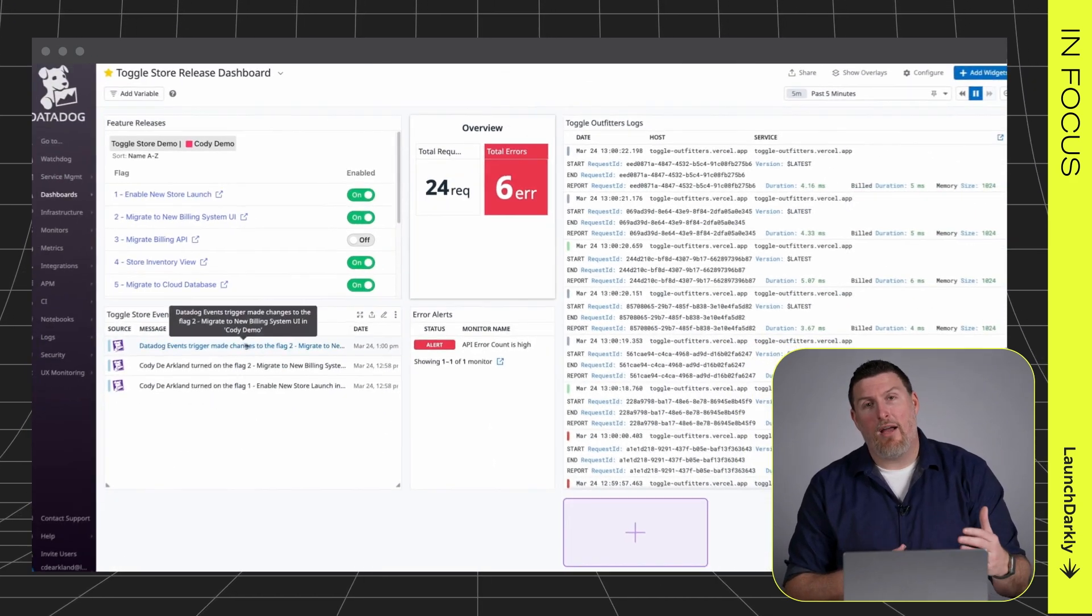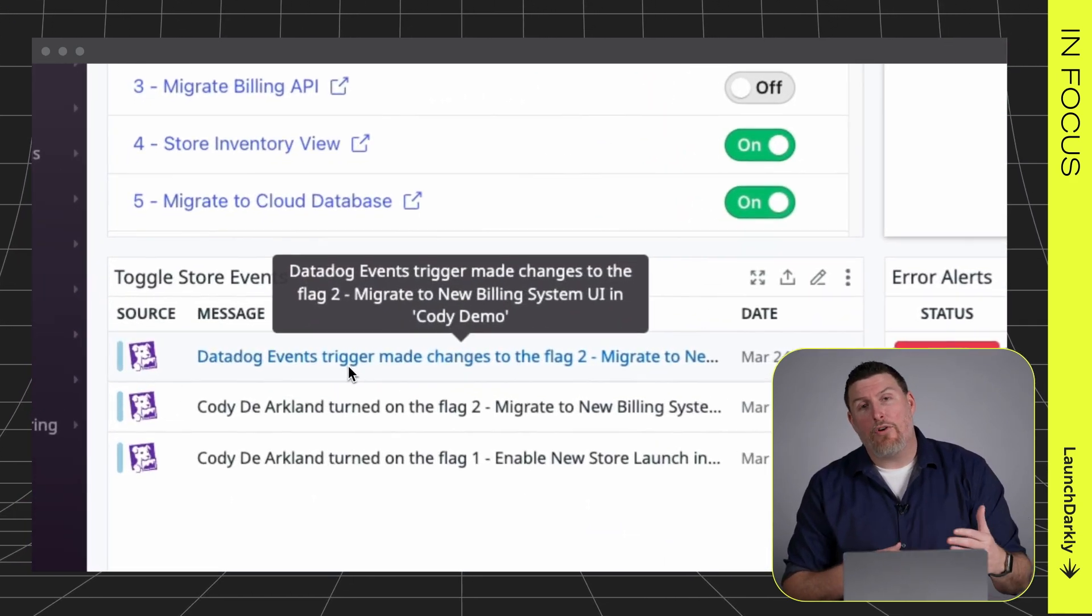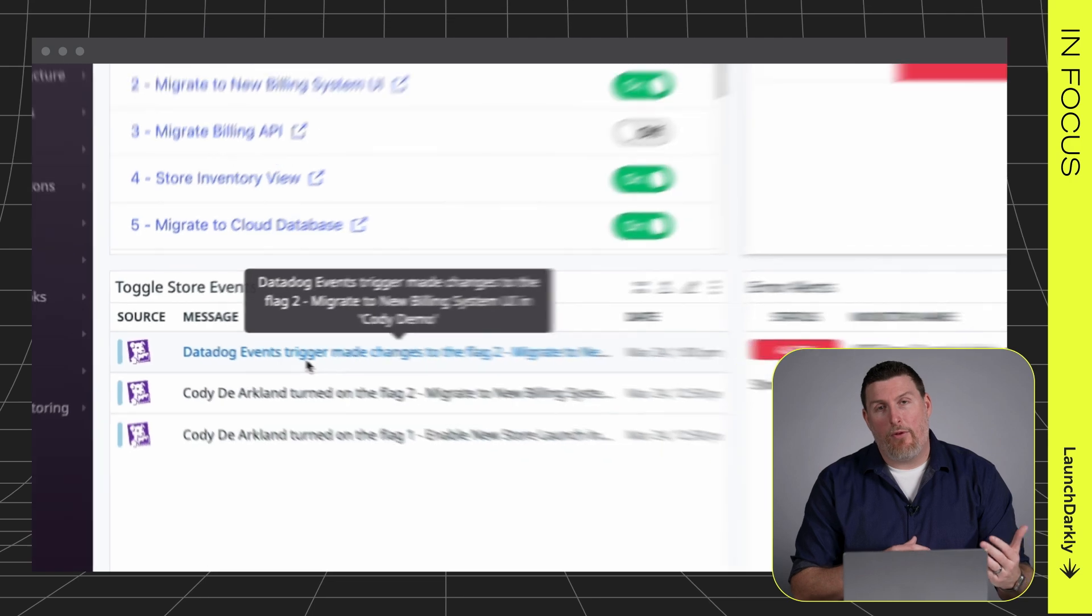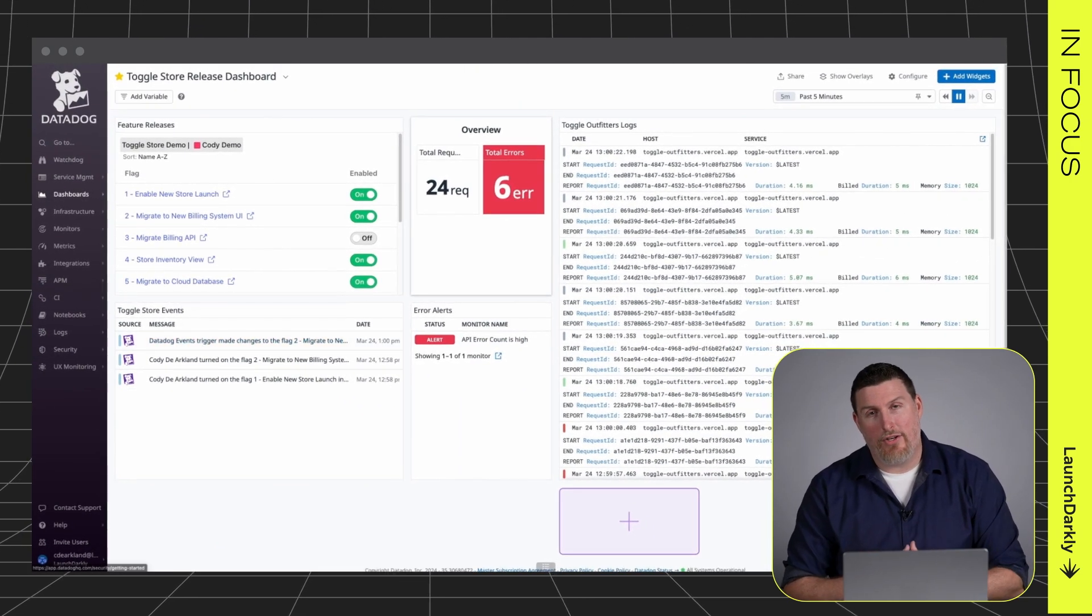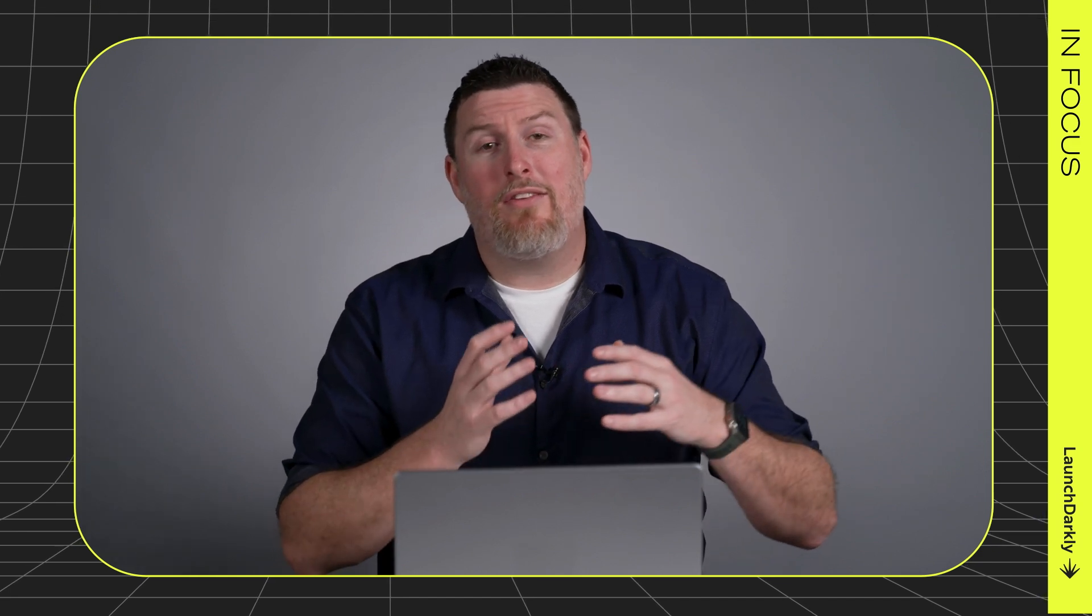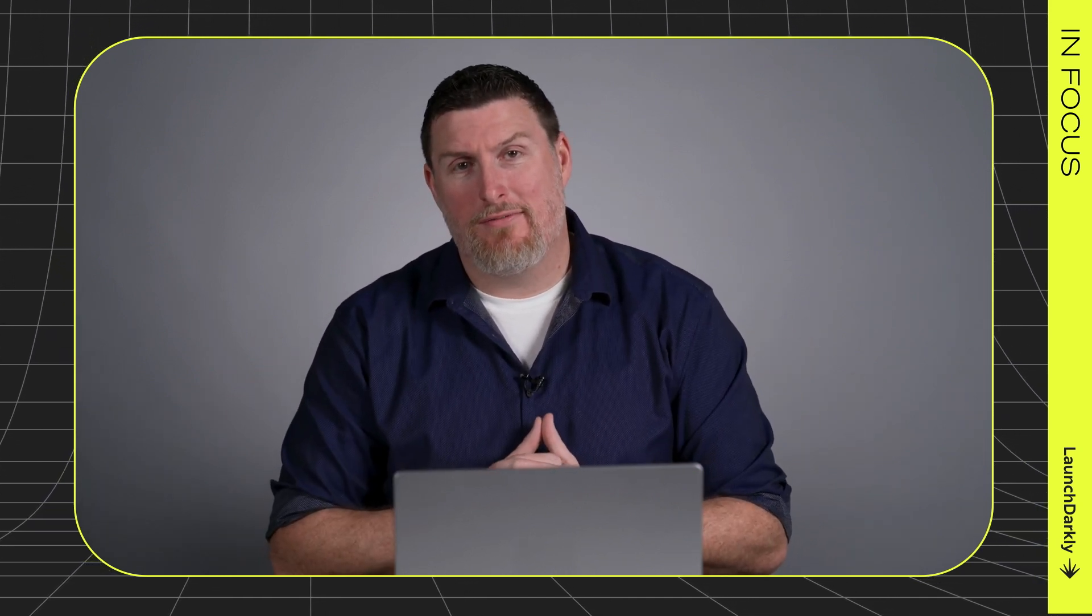If that error rate is climbing, we can use a flag trigger to automatically disable that problem feature inside of LaunchDarkly. Bringing LaunchDarkly closer to your application metrics is how we take away the scary part of releasing software, which isn't the moment where software was released. It's the few hours afterwards where you're wondering what the impact is on your users. Back to you, Tom.